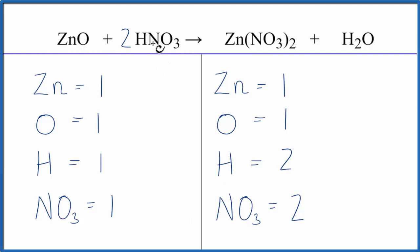Put a coefficient of two. This two applies to everything. So I have one hydrogen times two, that gives me two. Those are balanced. And then one nitrate ion, one NO3 times the two, gives me two. And those are balanced.